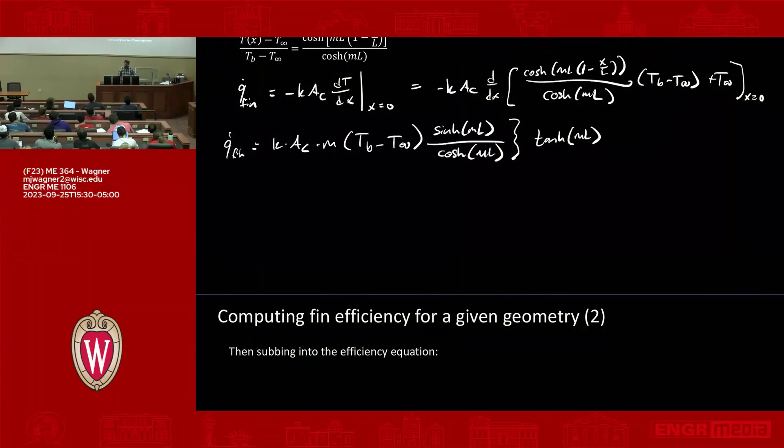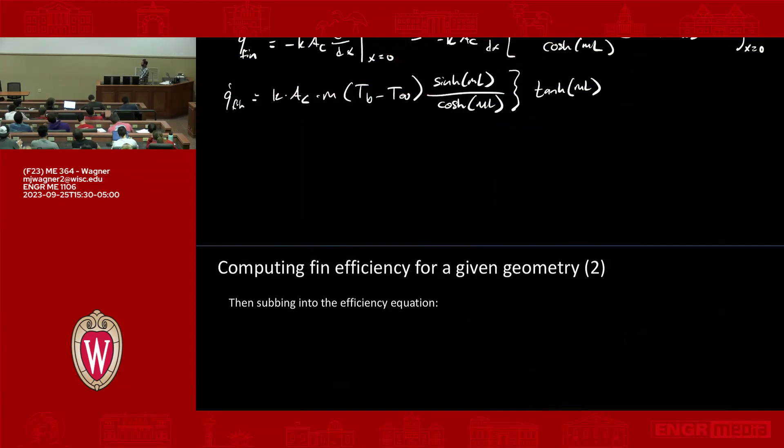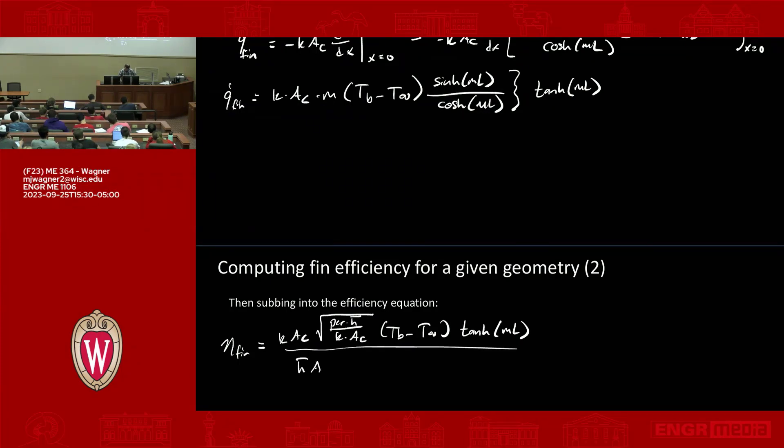So this is fine. So where do we go with this? Now we need to actually compute fin efficiency. So I'm going to substitute that. Sorry, I'll keep this so you can see it. I'll substitute that in to our definition of fin efficiency. So eta fin is equal to, let's see, this is the actual q dot. So k AC. Remember, M is just the square root of perimeter h bar over k AC. And then we have a TB minus T infinity. And we have a tanh of ML. And then in the denominator, we have our maximum, which is h bar times AS times TB minus T infinity. So I'm going through these steps. And I wanted to show you at least this part so you can kind of see something interesting.